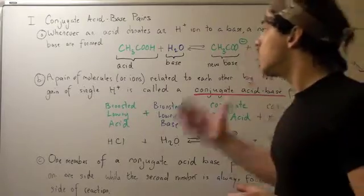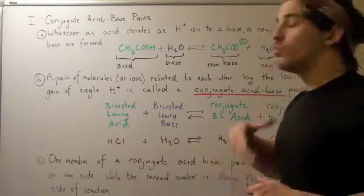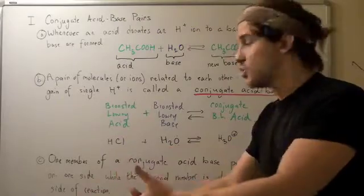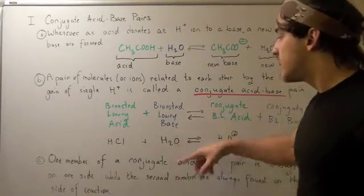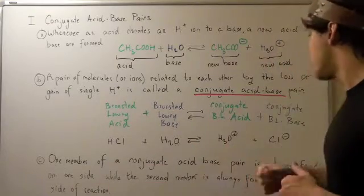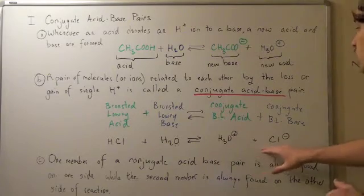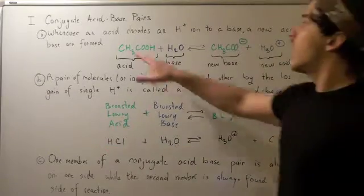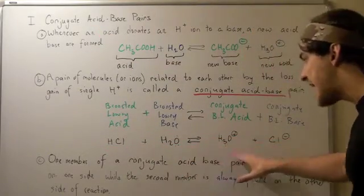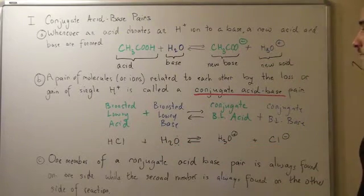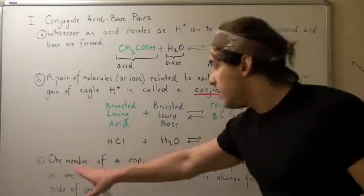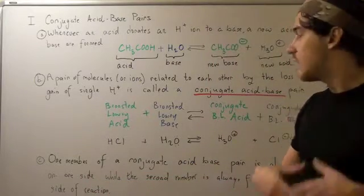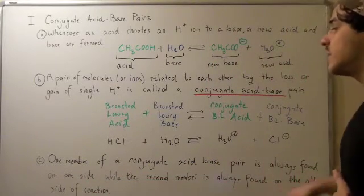Let's look at another reaction where a Brønsted-Lowry acid reacts with water as the base. The acid donates its H-ion, and the lone pair of electrons on the base accepts that H-ion, forming our new conjugate acid plus our new conjugate base. So this acid and this base are conjugate acid-base pairs, and this base and this acid are also conjugate acid-base pairs.